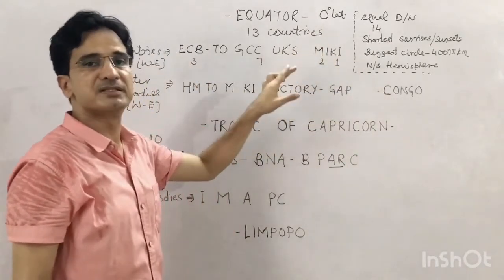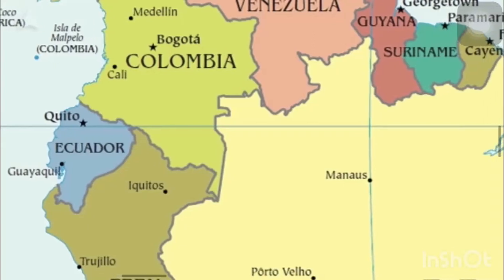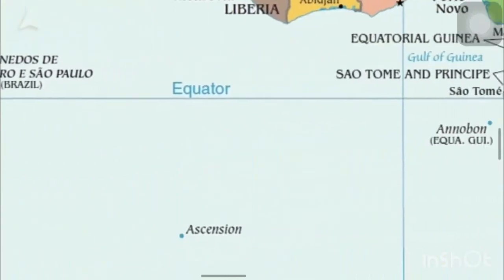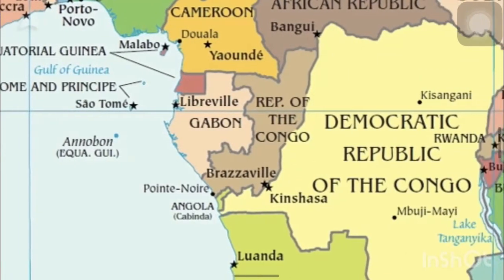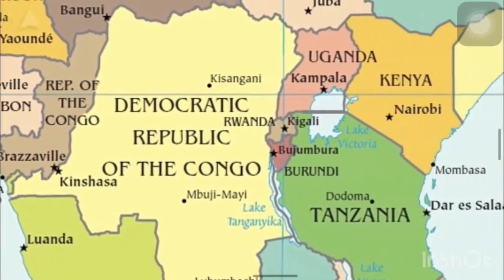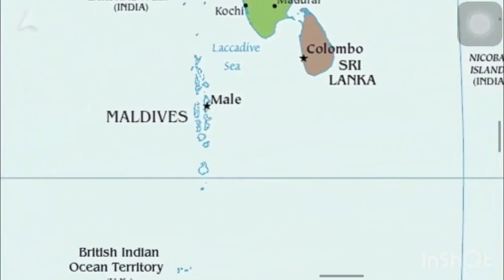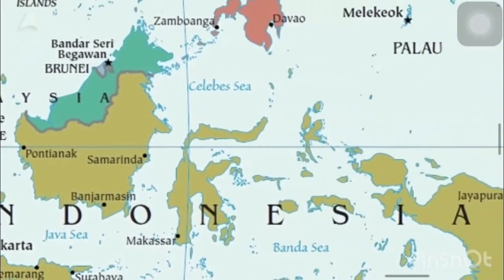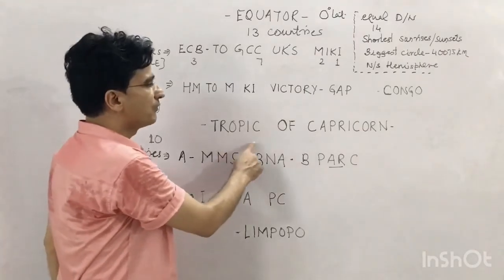The trick for equator countries 'ECB to GCC UK's Mickey' runs from west to east. E for Ecuador, C for Colombia, B for Brazil, TO for Sao Tome and Principe, G for Gabon, first C for Republic of the Congo, second C for Democratic Republic of the Congo, U for Uganda, K for Kenya, S for Somalia, M for Maldives, I for Indonesia (which has the maximum length of equator), and K for Kiribati.